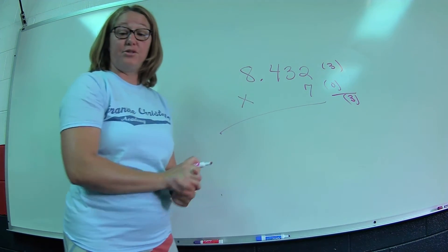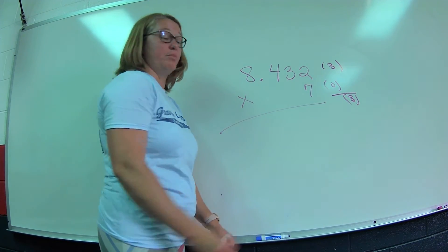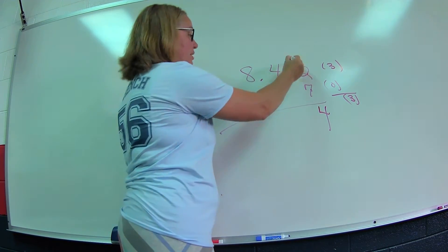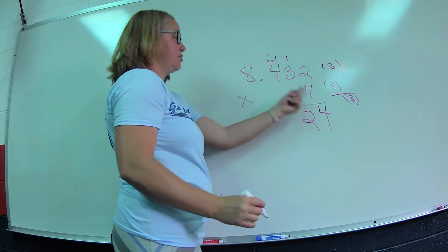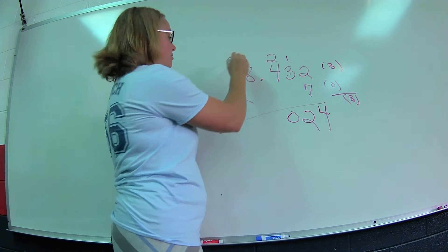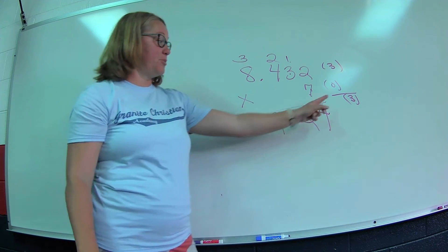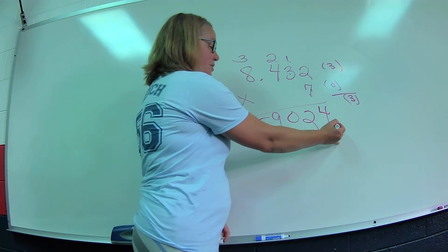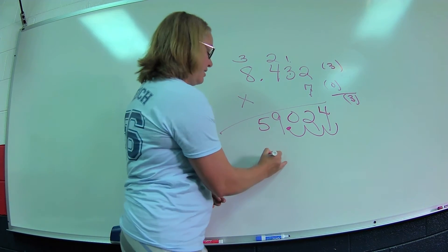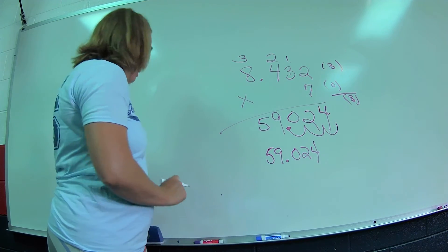Now I can multiply. Seven times two is fourteen. Seven times three is twenty-one, plus one is twenty-two. Twenty-eight plus two is thirty. Seven times eight is fifty-six, plus three is fifty-nine. Now my answer is not done yet. Remember, I need three decimal places, so my answer is 59.024.